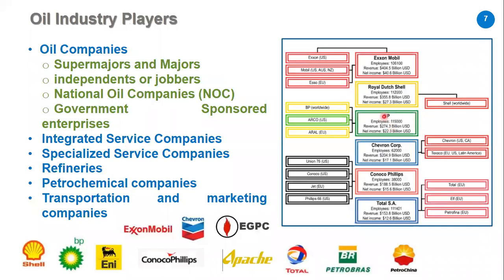How do we run our business? We run business through different sectors. The first type is oil companies, which includes supermajors and majors — like ExxonMobil, Shell, BP, and ENI. They are huge companies that invest in all types of sectors: upstream, downstream, and midstream. For example, ExxonMobil has over 100,000 employees and a net income of about $40 billion per year.